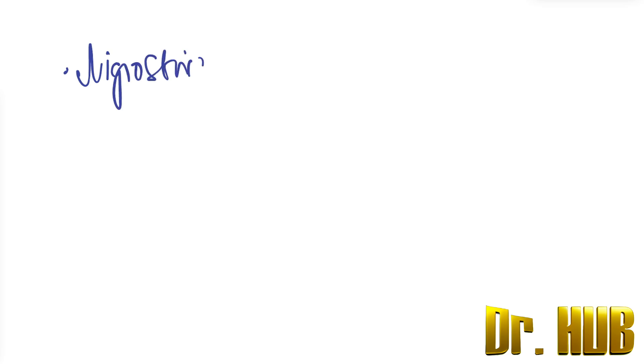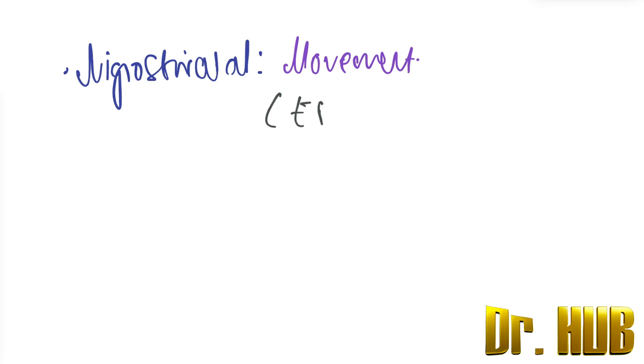We are talking about antipsychotic drugs and their actions. First, we look at the dopaminergic pathways. The first is the nigrostriatal pathway. The nigrostriatal pathway is concerned with movement, and the action of the drug blocking the D2 receptors results in extrapyramidal symptoms.